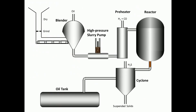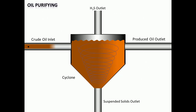The crude oil is then sent to a cyclone, where water, unconverted biomass, suspended solids, and hydrogen sulfide are removed from the crude oil.